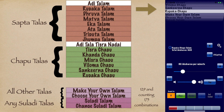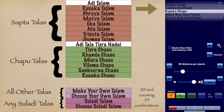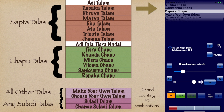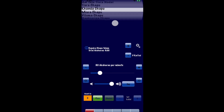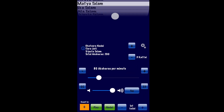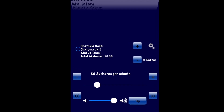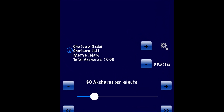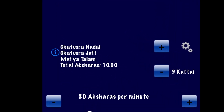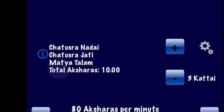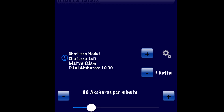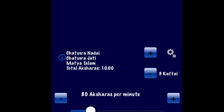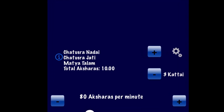You can also pick or create any custom Thalas — currently we have 129 and counting. We'll talk more about these in subsequent videos. Once a Thalam has been selected, you can see its basic information. For example, Mathya Thalam has a total of 10 Aksharas and is also called Chattushra Nadai Chattushra Jadi Mathya Thalam.